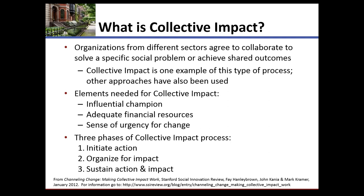Some elements needed for collective impact include an influential champion — a community leader who steps up and leads the charge — and adequate financial resources. It's important to consider how you leverage existing resources, and that's what was done in Jacksonville: leverage existing resources to launch the initial project and then prepare to pursue other funding. There has to be a sense of urgency for change, and that urgency needs to be based on data from that community. The phases are to initiate action, organize for impact, and sustain action and impact. It's important that whatever you start, you start with sustainability in mind.